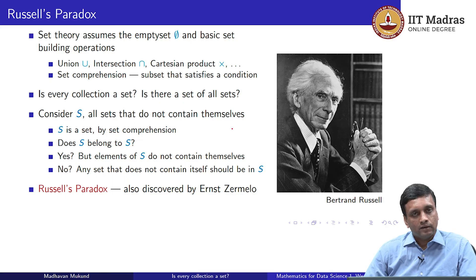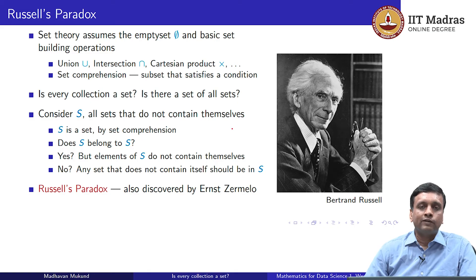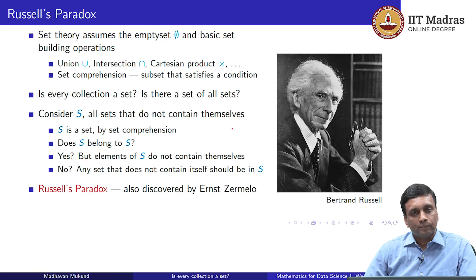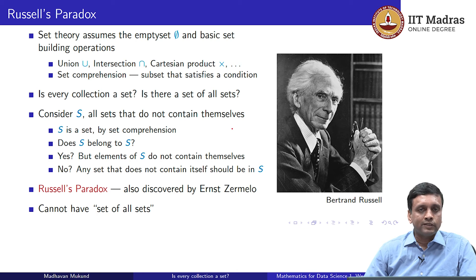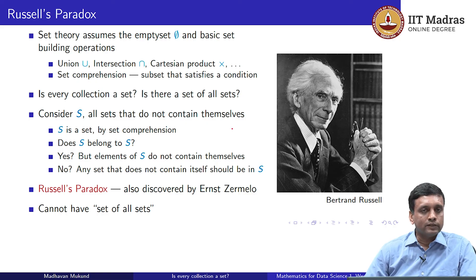This is called Russell's paradox. He was the first person who published this and made it publicly known. It was also independently discovered by another well-known set theorist of the time, called Ernest Zermelo. What this really tells us is that we made some assumption, and from that assumption we reached a contradiction. So something must be wrong in one of our assumptions, and it turns out that the assumption that goes wrong is the assumption that there is a set of all sets.